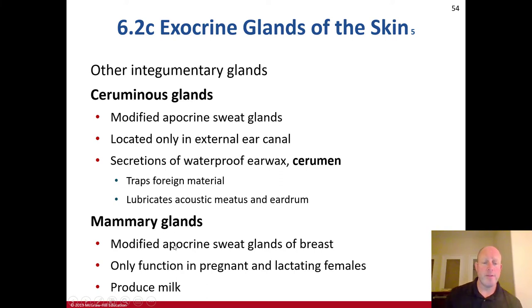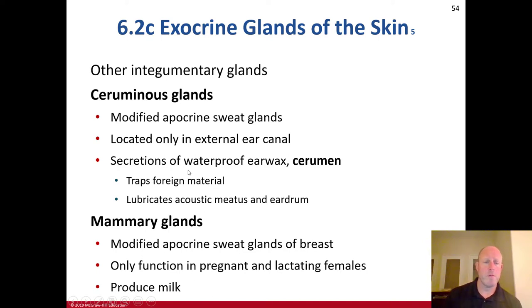The mammary glands are essentially modified apocrine sweat glands of the breast. They function in pregnant and lactating females, producing milk.